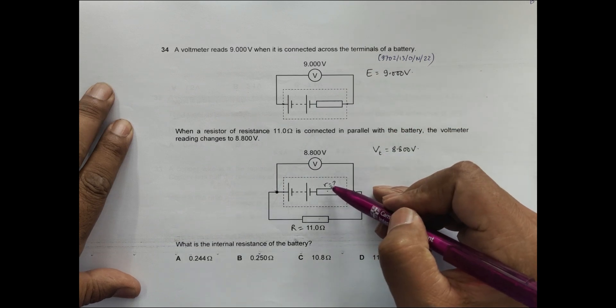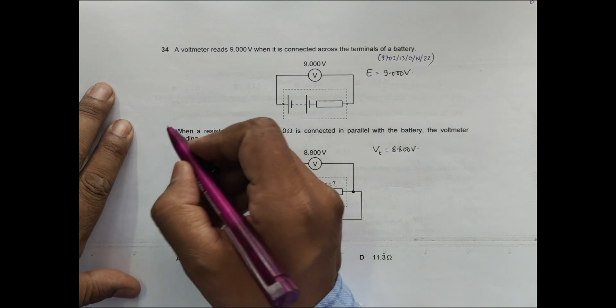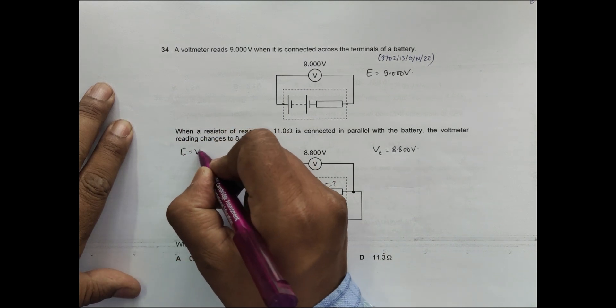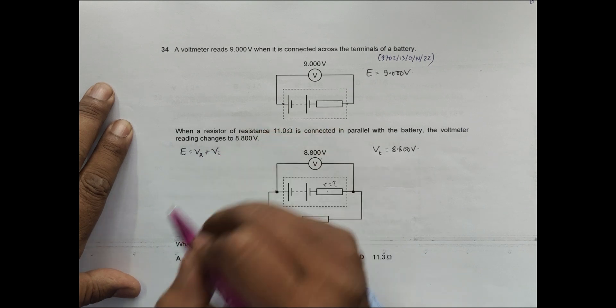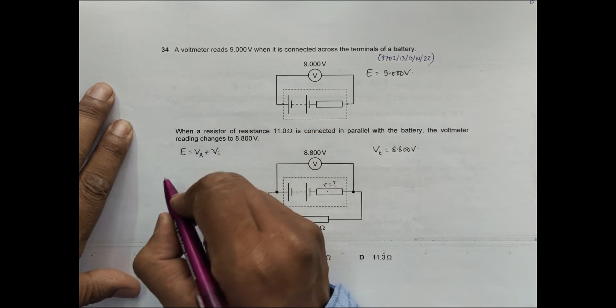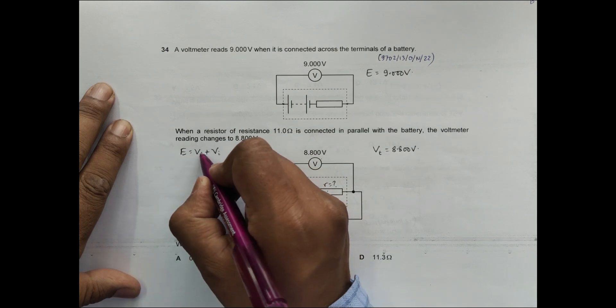We know that E is equal to V outside plus V inside potential loss. If I subtract this, V outside is equal to the terminal PD.